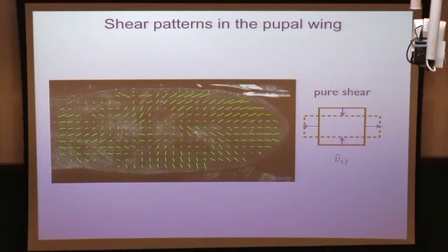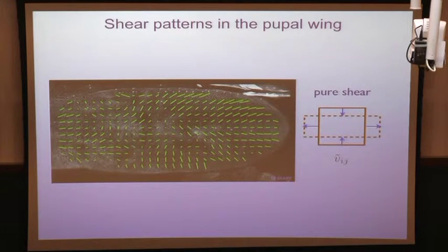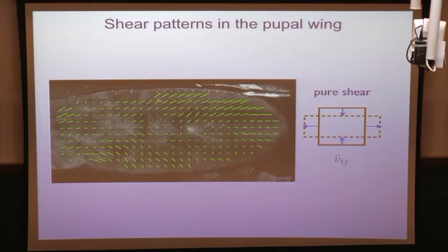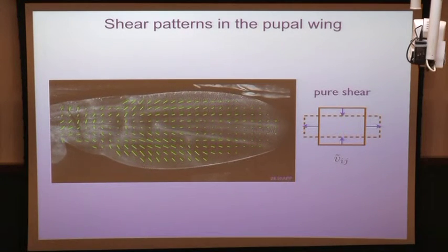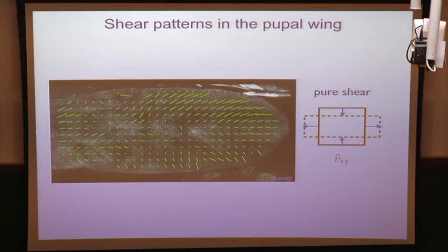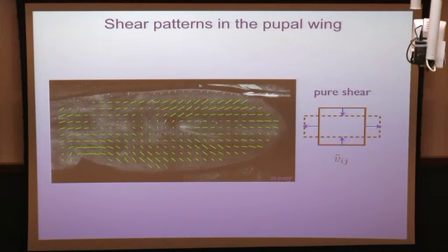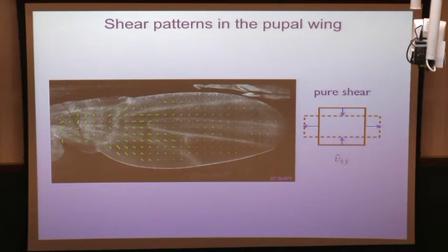This movie illustrates the shear field: the wing is decomposed into little squares, and in each square the shear is calculated and represented by a line indicating direction and magnitude. Plotting this over time shows a pattern with some spatial variation, but most of the shear inside the blade is oriented along the proximal-distal direction — the horizontal axis.